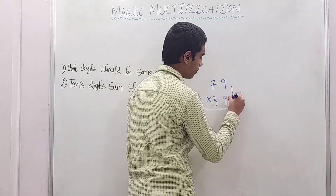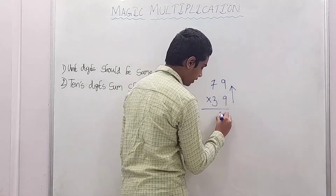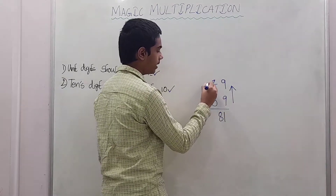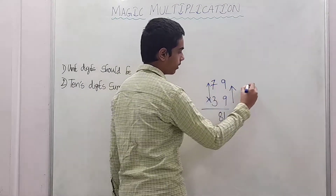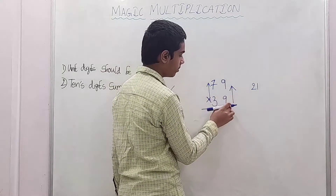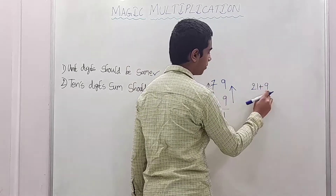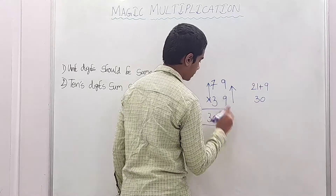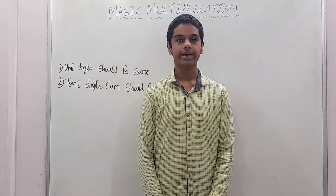First step: multiply unit digit numbers — 9 into 9 is 81. Second step: come to the 10th place and multiply the 10th place digit numbers — 7 into 3 is 21. Now add the unit digit down number, that is 9: 21 plus 9 is 30. So write 30. Therefore, 79 into 39 is 3081.